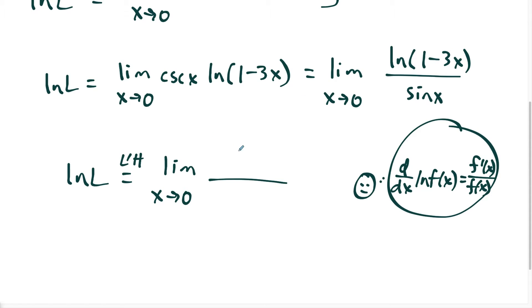So in the numerator, what I'm going to have is I'm going to have one over one minus three x, but then I just have to remember to put the derivative of the inside on top here. So the derivative of one minus three x is minus three. So that's the derivative of our numerator function. And the derivative of sine x is cosine x.